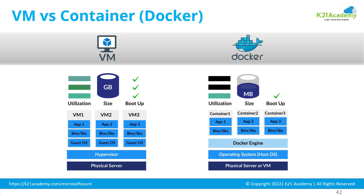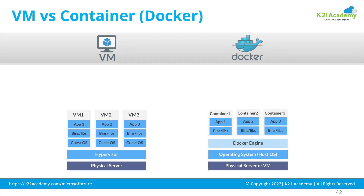Earlier, probably until around 2014-15, you were deploying applications on virtual machines. A virtual machine is where you have a physical server, on top of which you install a hypervisor. The hypervisor provides the necessary infrastructure to run multiple machines with different operating systems on the same hardware, allowing you to create multiple virtual machines and deploy your applications.